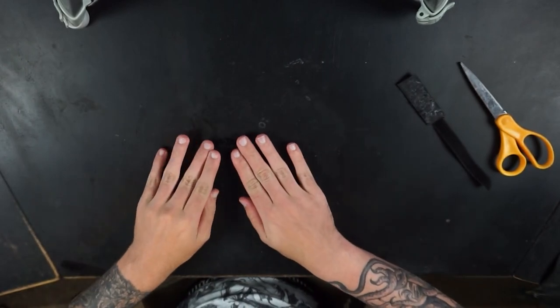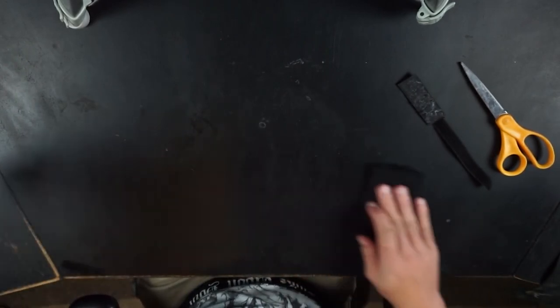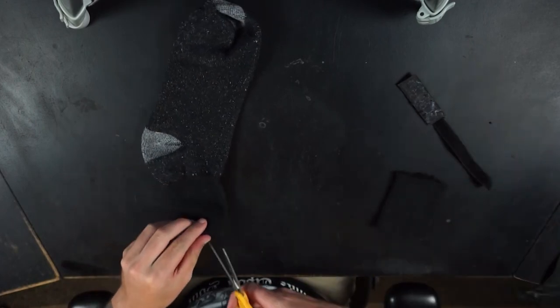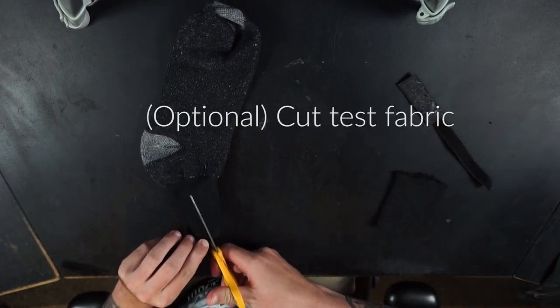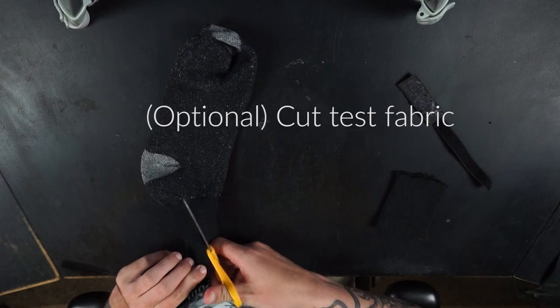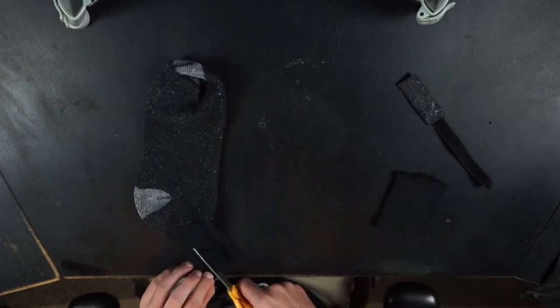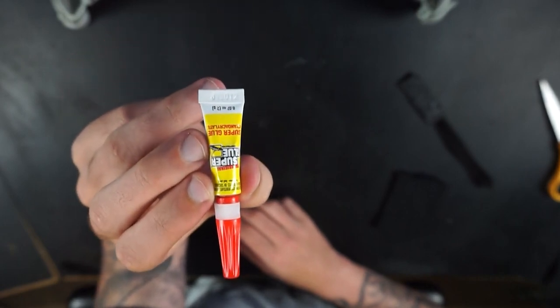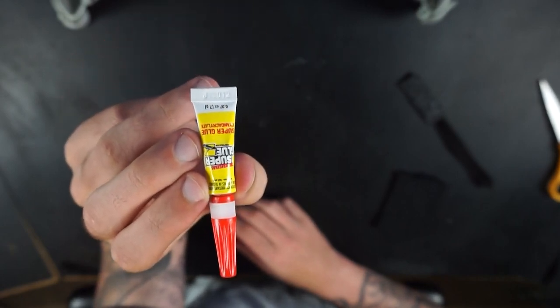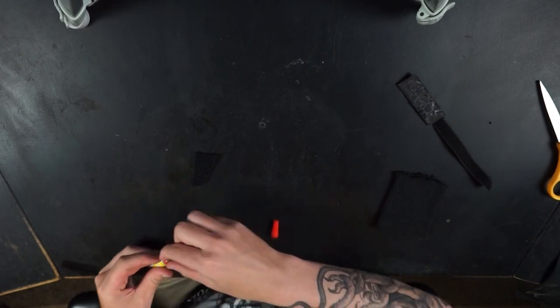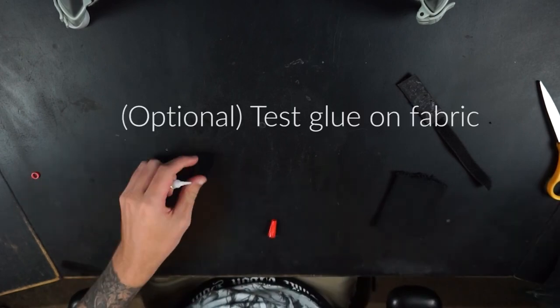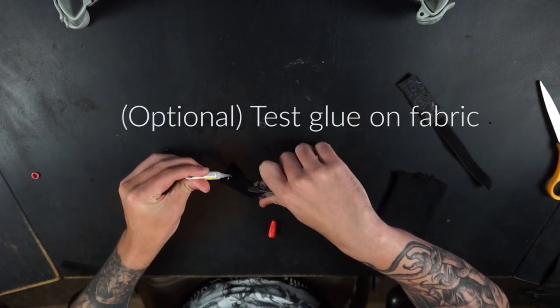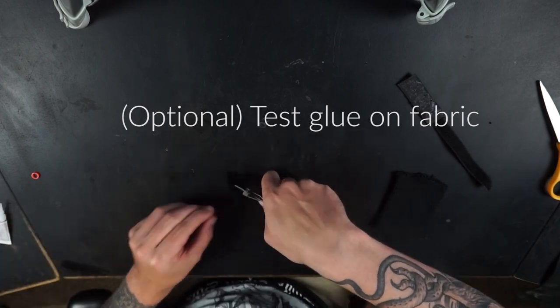So one thing I would do, and this is optional but I highly recommend it, is actually cut a piece of test fabric from whatever fabric you're using. The reason being is because for those of you who don't know, super glue actually has an active ingredient that can cause your fabric to actually smoke or even catch fire due to the quick chemical reaction of it drying. So again, cut a little piece of fabric, put some super glue on it, let's just make sure nothing catches fire.